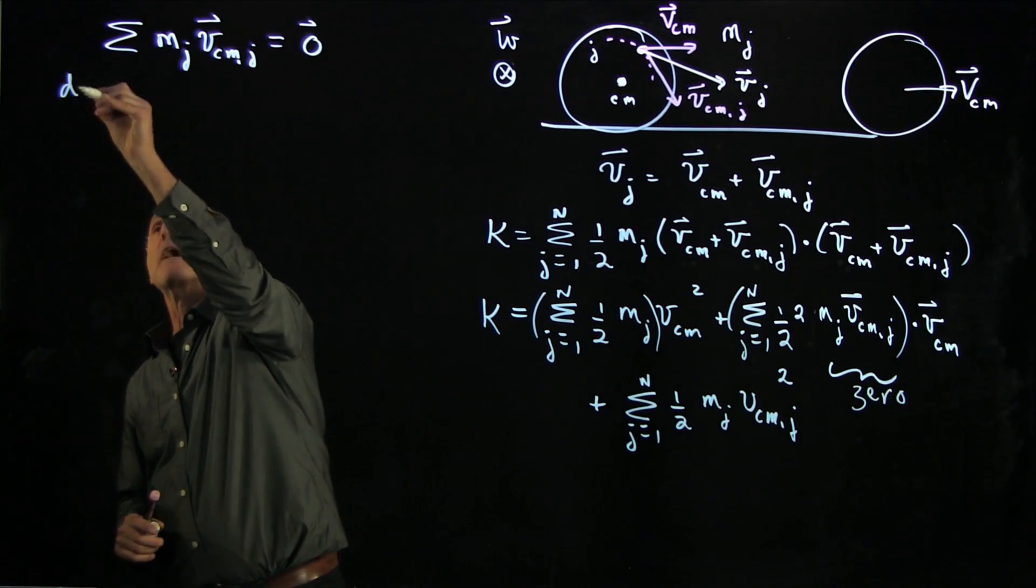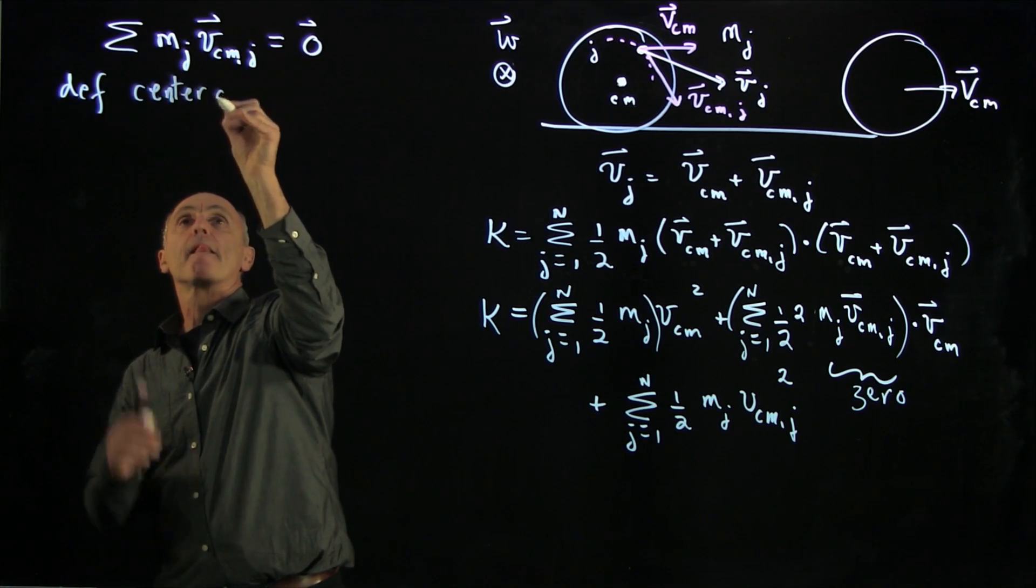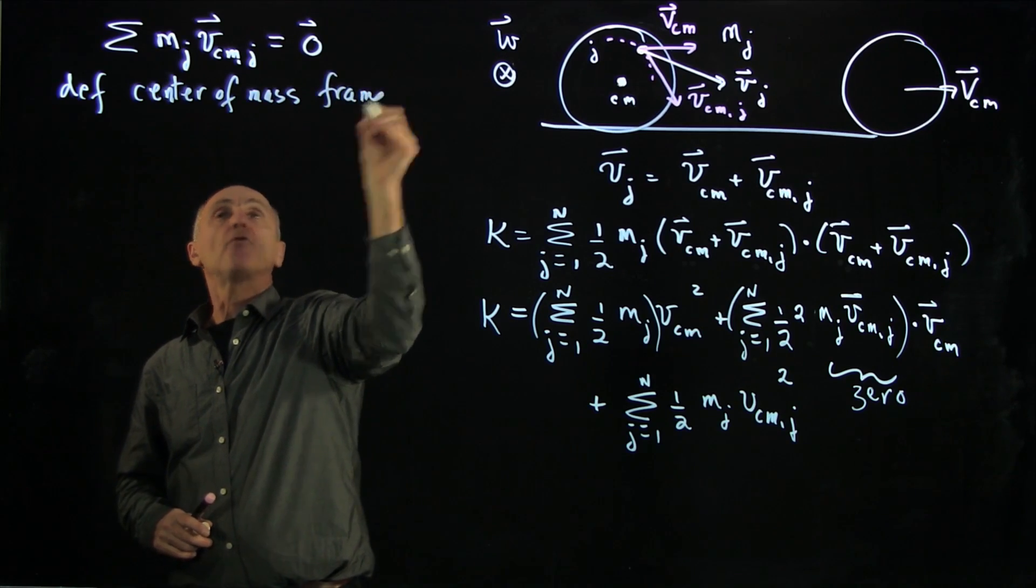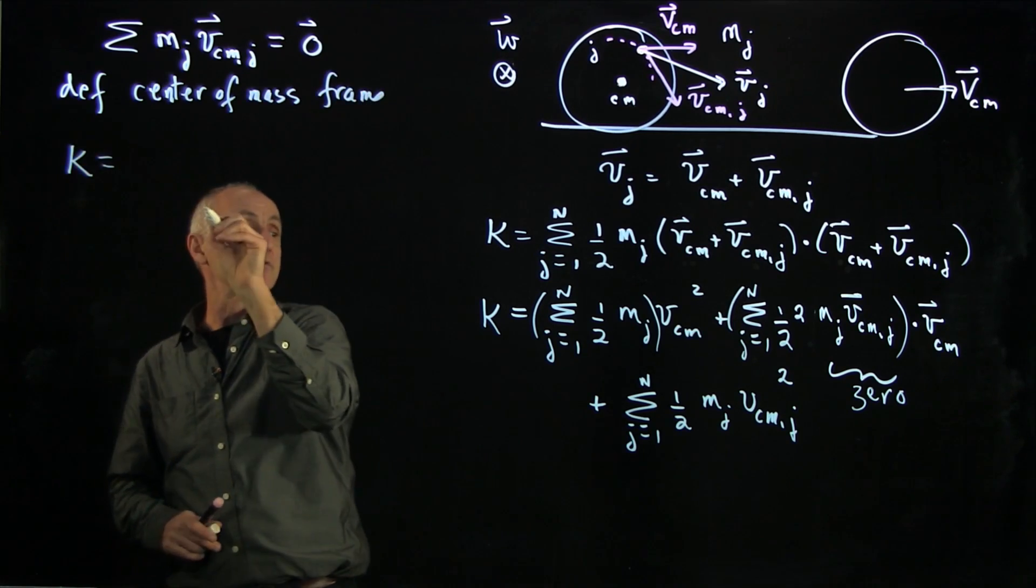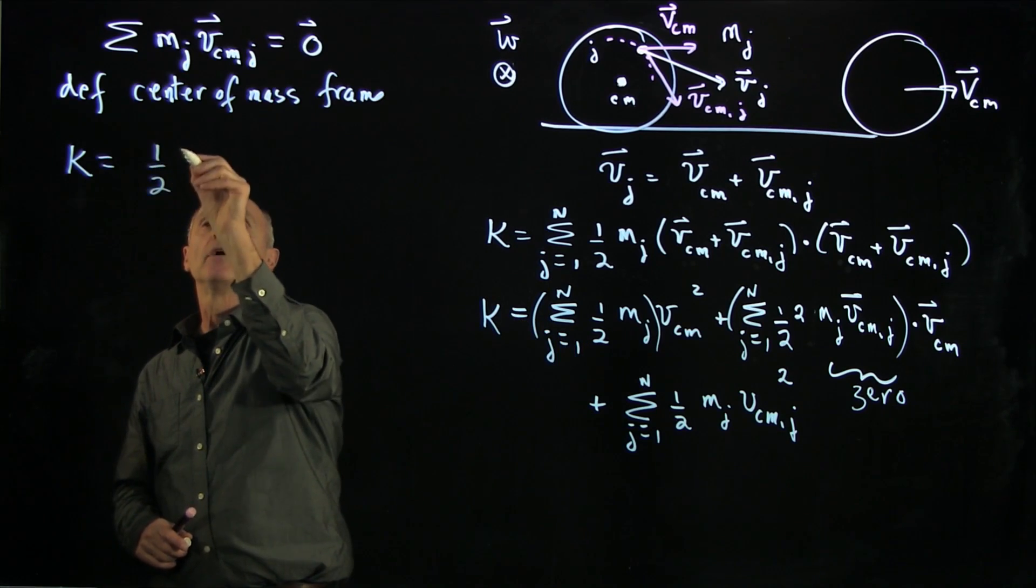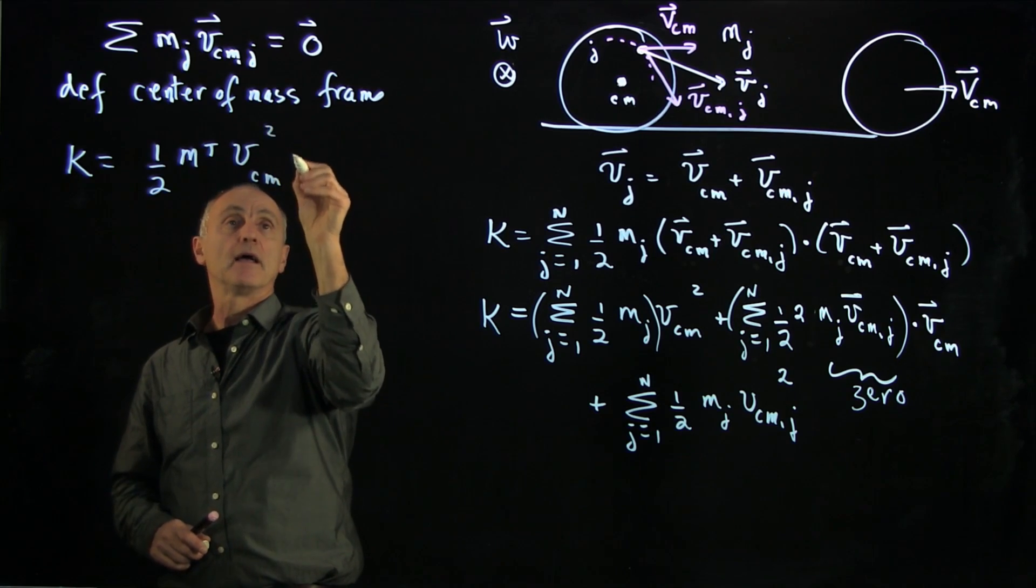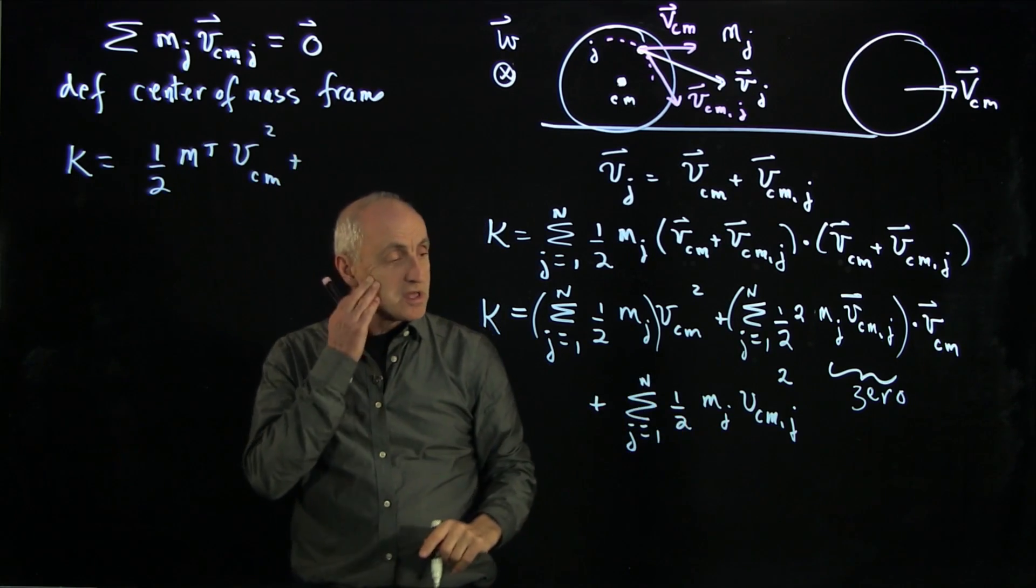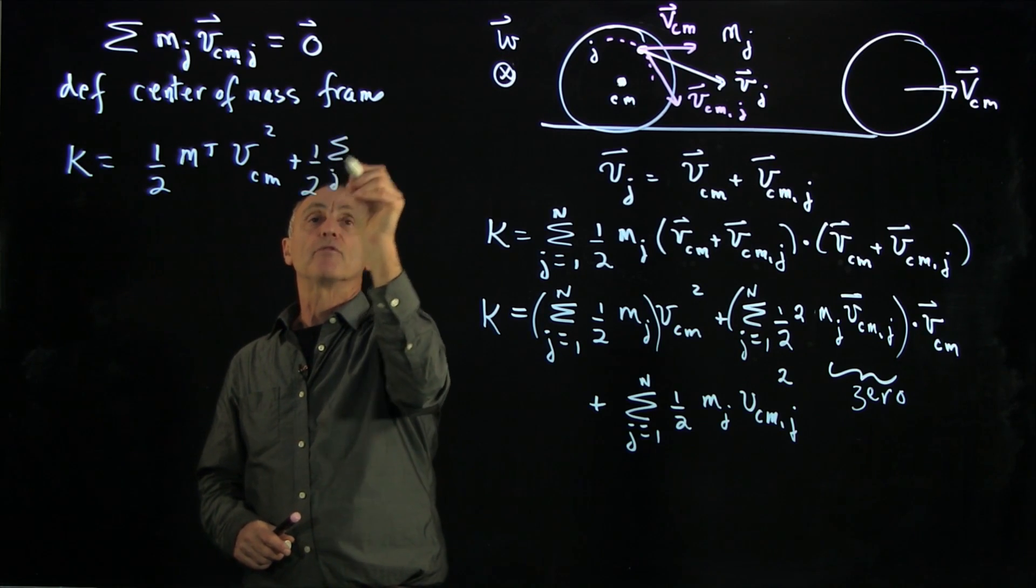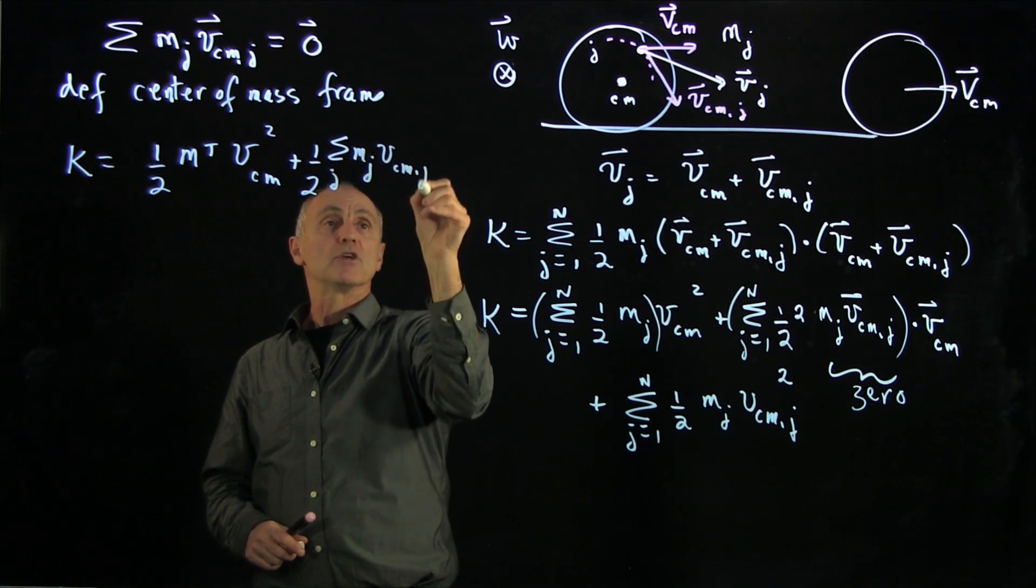So this, remember, was how we defined the center of mass reference frame. And therefore, our kinetic energy consists of two pieces. This first piece is just 1/2 the total mass times vcm squared. And our second piece over here, we'll just write it out now, 1/2 sum over j mj vcmj squared.